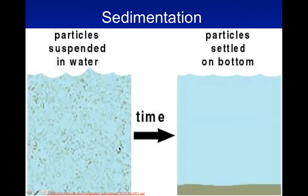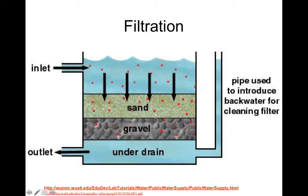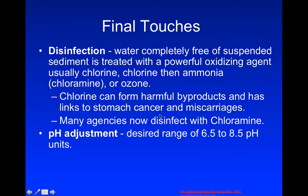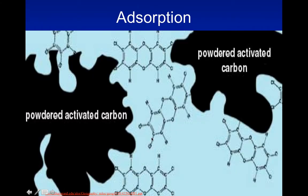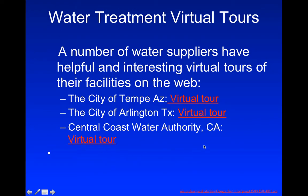Sedimentation does the same thing but it's much longer. Filtration is a natural way — like our groundwater — and they simulate it in water treatment and wastewater treatment plants. Final touches are chlorination, ozone, and UV light, and they ensure the pH is within the proper range. Absorption is another method where they'll take activated carbon and filter through it to draw out impurities. There are also water treatment plants in Arizona, Texas, and California where you can go through virtual tours.